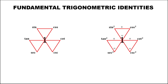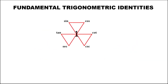Let's solve this problem on fundamental trigonometric identities using these two figures, which help us find different trigonometric identities. Using the first figure, take note that for the ratio of two functions, the result is the function before them. So if we have sine over tangent, this is equal to cosine.